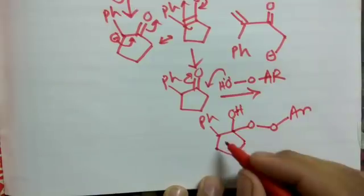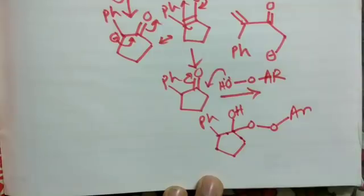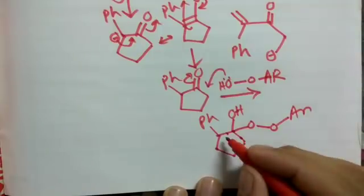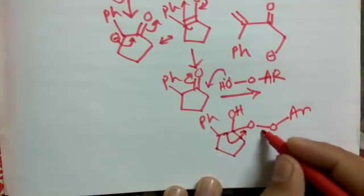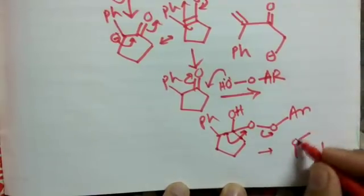Now you have to decide whether this group will migrate or this group will migrate. If you know about migrating aptitude, always the more substituted group will migrate. So this group will migrate and you will get this product.